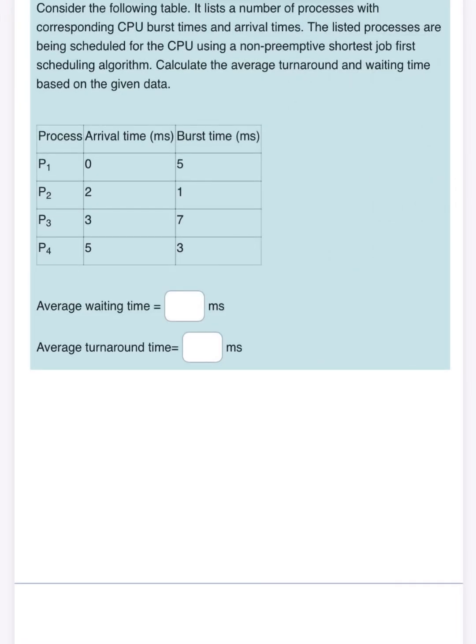Hi everyone, in this video I'm going to solve a problem regarding operating system and CPU scheduling. I'll focus on a non-preemptive shortest job first scheduling algorithm. As you see, we've got four processes P1, P2, P3, P4 and we've got the arrival times 0, 2, 3, 5 and the burst times.